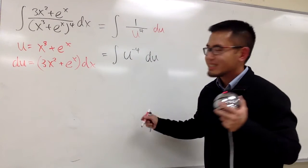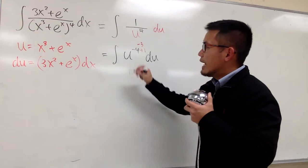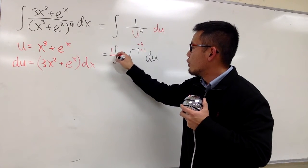Du. And now we can integrate. Add 1 to the power and negative 4 plus 1 is negative 3. And we have to divide it by this new power, which is the same as multiplied by 1 over negative 3.